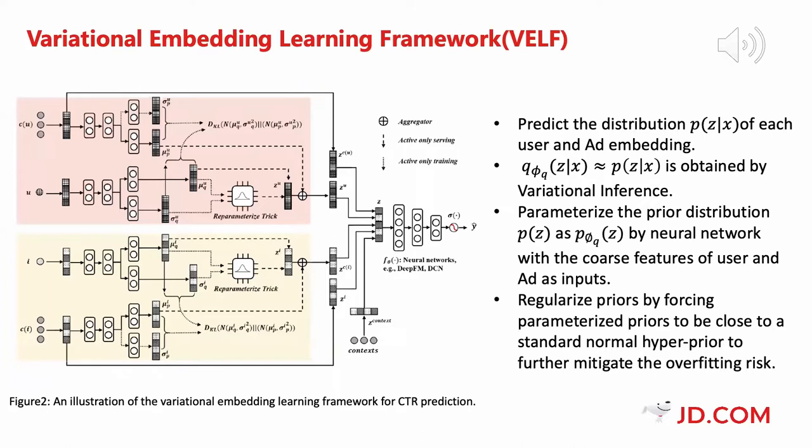VELF addresses the cold-start problem via alleviating overfitting caused by data sparsity in two ways: learning probabilistic embeddings and incorporating trainable and regularized priors which utilize the rich set information of cold-start users and ads. The two techniques are naturally integrated into a variational inference framework, forming an end-to-end training process.